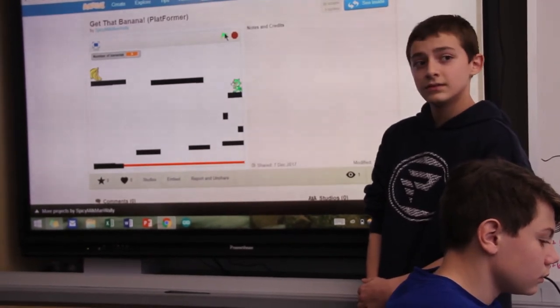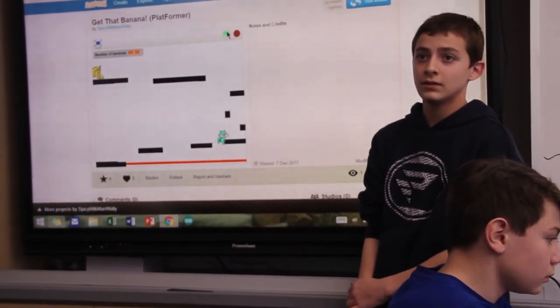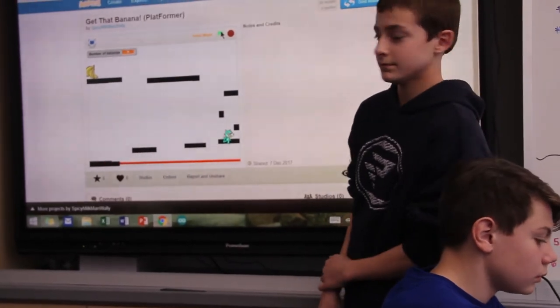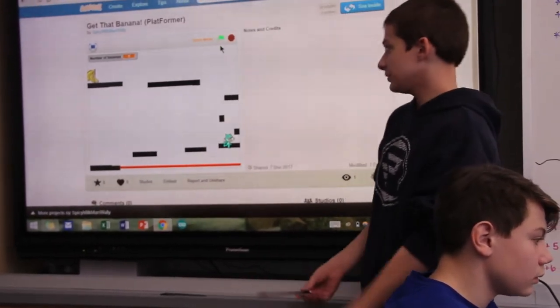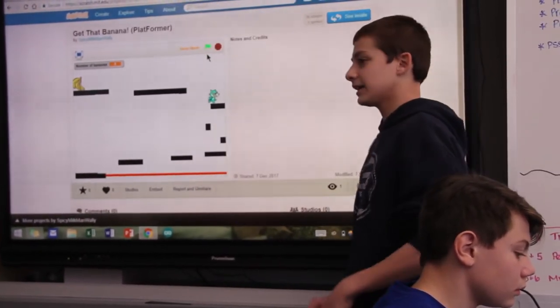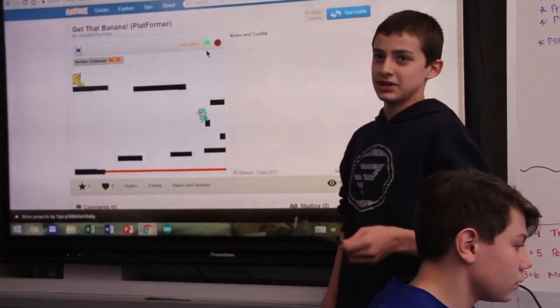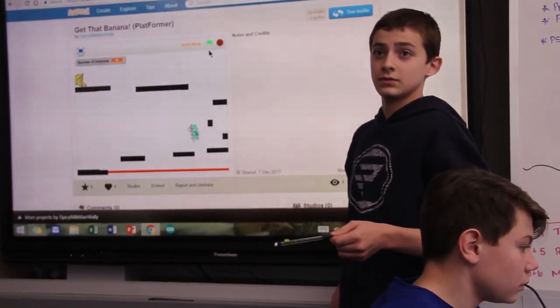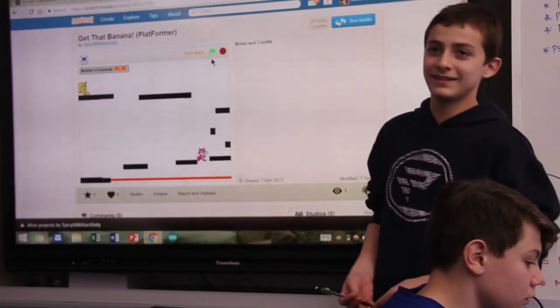So how do you change the score for the banana? What programming concept is that? Well, you just kind of go into the Sprite Banana and be like, if touching Sprite 1. But what is the score? The variable.